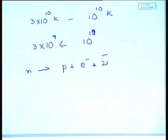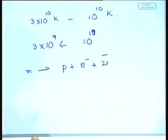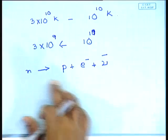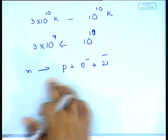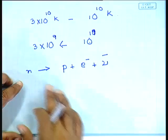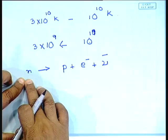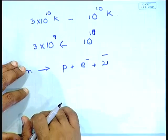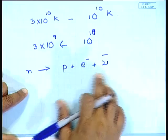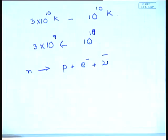The only reaction that remains effective after this is neutrons going to protons plus electrons plus anti-neutrino. Somewhere in the range 10^10 to 3×10^9 Kelvin, this is the only effective reaction. So finally, the neutrons essentially decay to protons with the emission of one electron — this is beta decay.